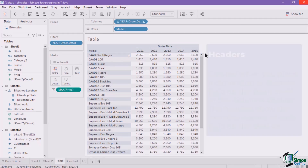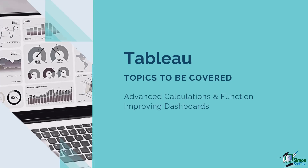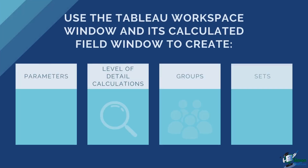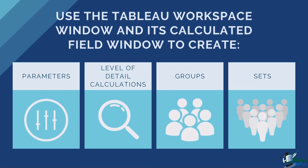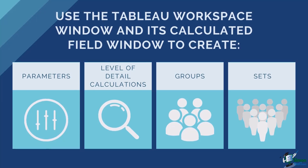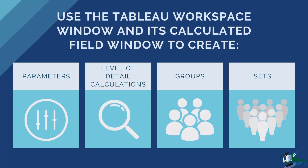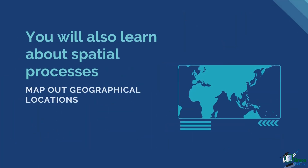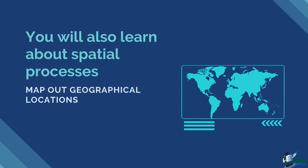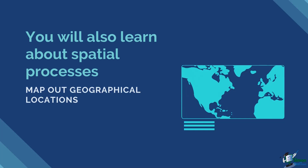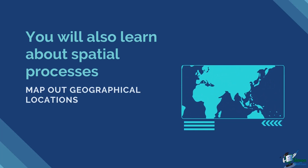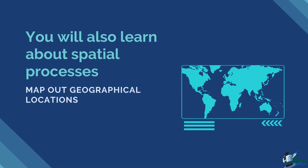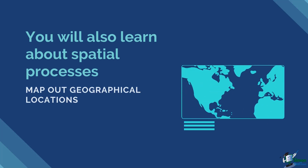Now that you're ready, let's start with advancing in Tableau. The main sections in this course begin with advanced calculations and functions. In this initial section we will recurrently use the Tableau workspace window and its calculated field window to create parameters, LOD calculations, groups, and sets. These functions are useful for creating complex data values and setting a specific detail level of your data set. You will also learn about spatial processes where you can map out geographical locations. This section also covers advanced filters and quick table calculations to assist in making your dashboards more dynamic and user friendly.